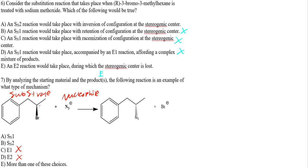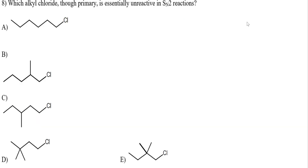What happened: the bromine pops off, forming a carbocation (flat). The nitrogen comes in from the back and hydrogen goes to the front. So in the product, hydrogen should be a front wedge and the nitrogen group should be in the back. We then have a lone bromine paired with sodium. The answer is E.